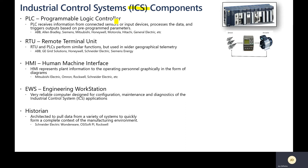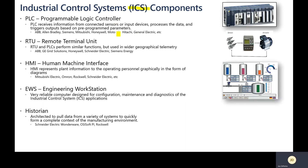Very similar to a PLC is a remote terminal unit, or RTU. An RTU is used similarly to a PLC but in wider geographical telemetry — you can spread these out more from a geographical perspective. Then we have the HMI, the human machine interface, which gives you a graphical representation of the process controls. In this diagram, you can see tanks being filled with temperature and pressure sensors, and if everything is green, that's a good thing — it gives a graphical user interface for easy process monitoring.